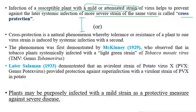The phenomenon of cross protection was first demonstrated by McKinney in 1929, who observed that tobacco plants systemically infected with the light green mild strains of tobacco mosaic virus can give protection against the severe strains of tobacco mosaic virus.